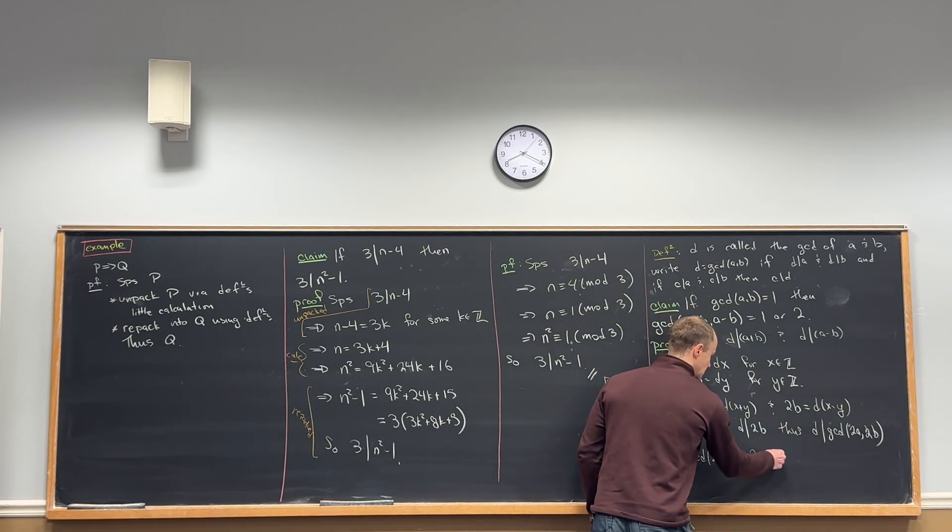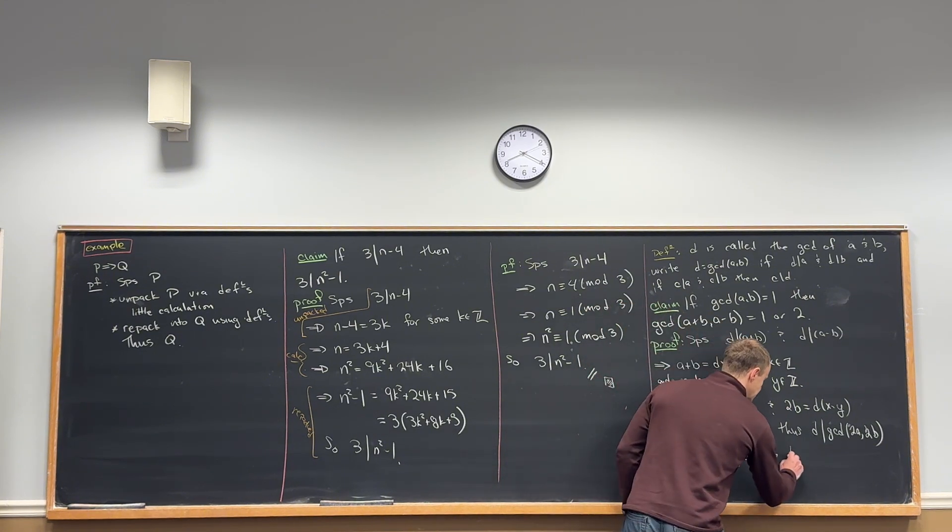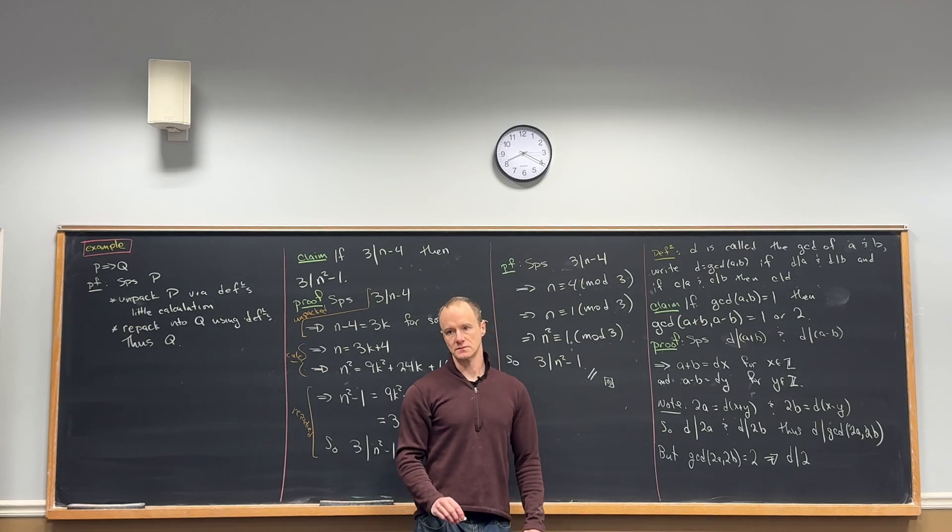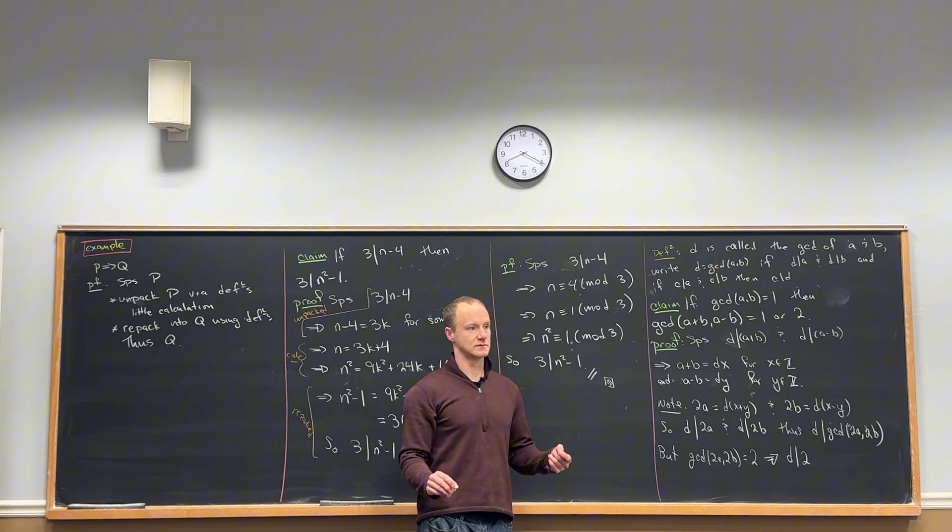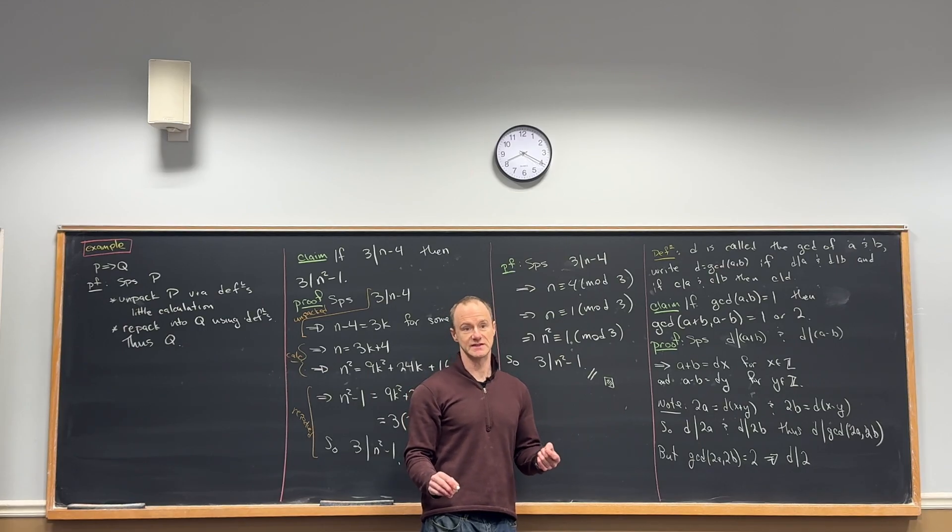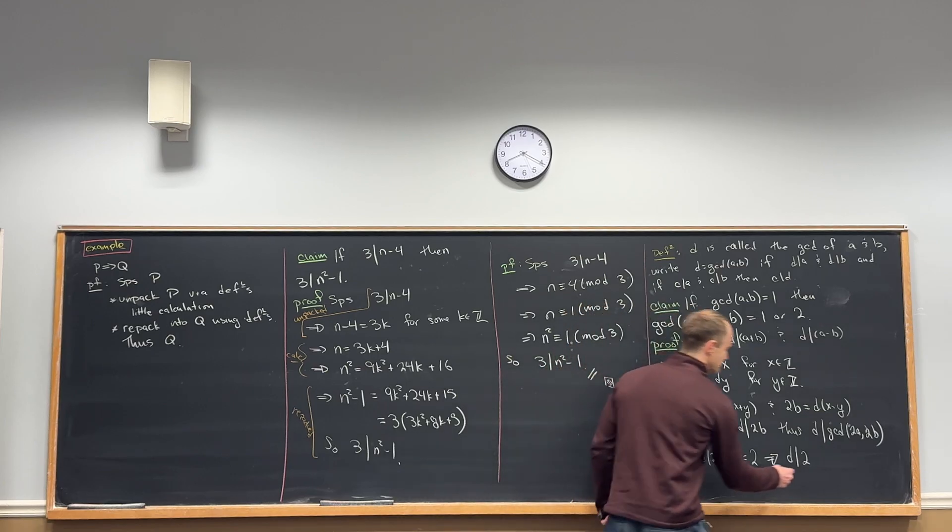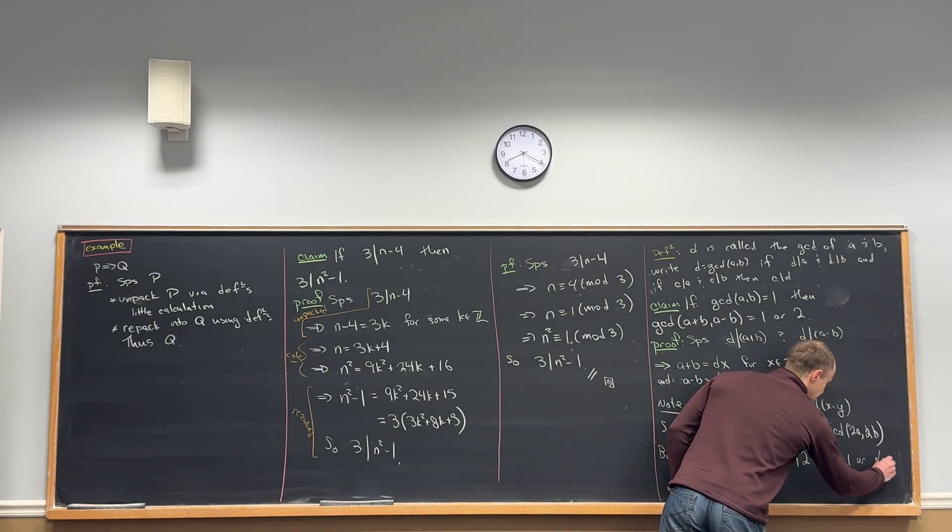D divides the GCD. So that means D divides 2. But tell me, what are the only two numbers that divide 2? Yeah, because 2 is a prime number. So that means that D equals 1 or D equals 2.